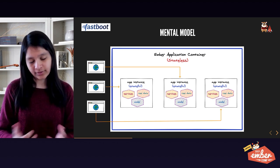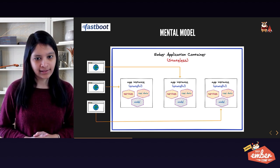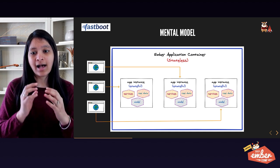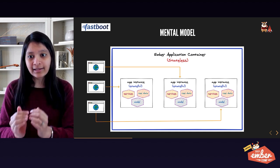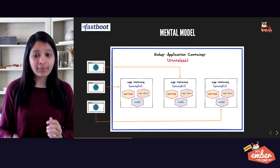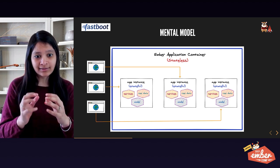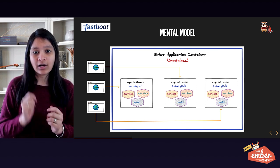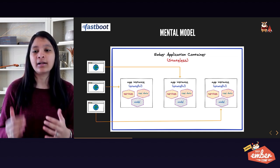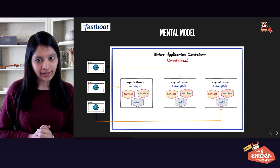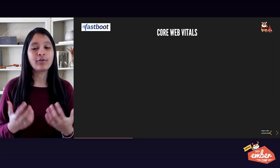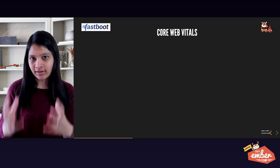Once a request has finished serving we destroy the app instance and its state. Because these app instances run inside a sandbox we prevent state leakage between instances. One thing to be mindful of is that since application instances leverage the same container, we should avoid putting anything on the global scope or class scope, because it might end up leaking between instances. That's one thing to be careful about.